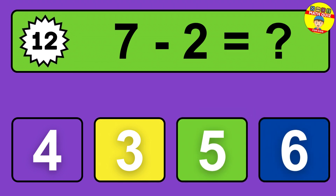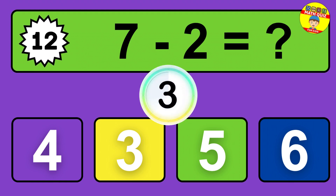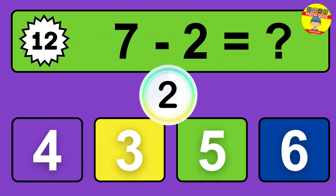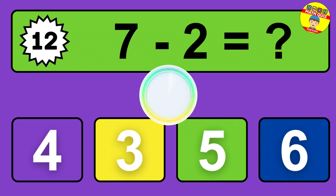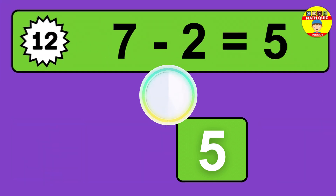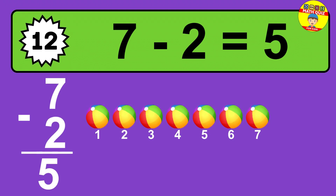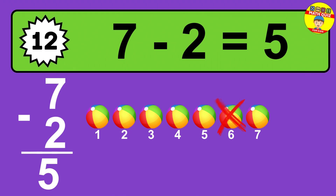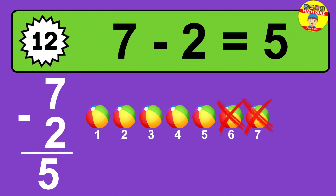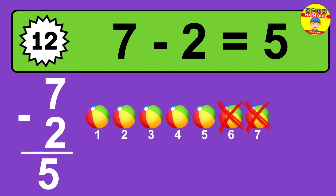Question twelve: seven minus two equals what? The answer is seven minus two is five. Let's count it: one, two, three, four, five.